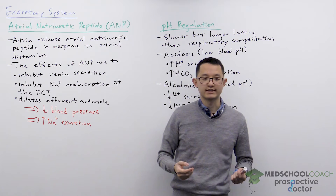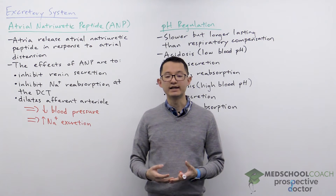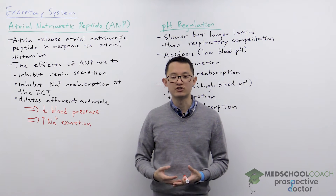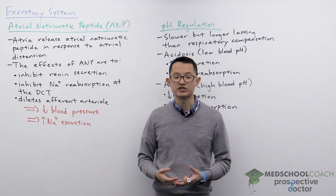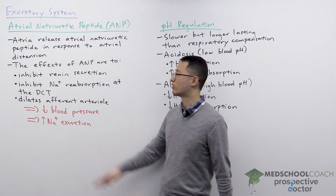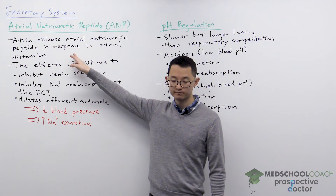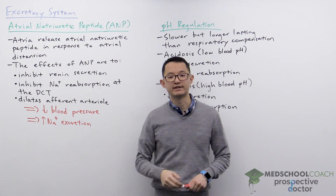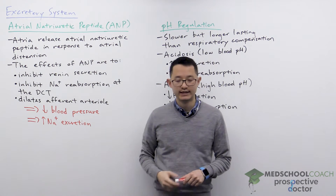The way it works is if blood pressure is high, this is going to result in more stretching of the atria, or more atrial distension. In response to this, the atria secretes ANP.